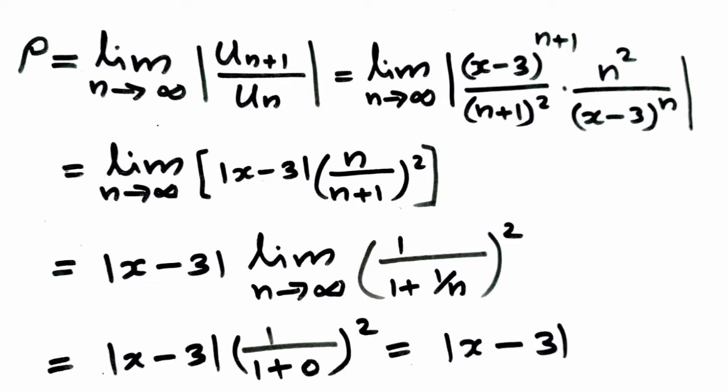Here we apply the ratio test for absolute convergence. That is rho equal to limit n tends to infinity modulus of u_(n+1) divided by u_n. That is equal to limit n tends to infinity modulus of x minus 3 the whole raised to n plus 1, divided by n plus 1 square, into n square divided by x minus 3 the whole raised to n. That is equal to limit n tends to infinity modulus of x minus 3 into n divided by n plus 1 the whole square, which we can write as mod x minus 3 into limit n tends to infinity 1 by 1 plus 1 by n the whole square.